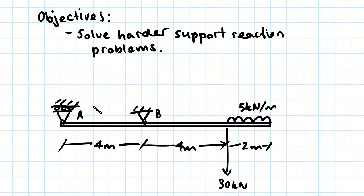We have two loadings on this beam. We have a 30 kilonewton force acting at 8 meters from A and 4 meters from B, and we have a 5 kilonewton per meter uniformly distributed load acting on